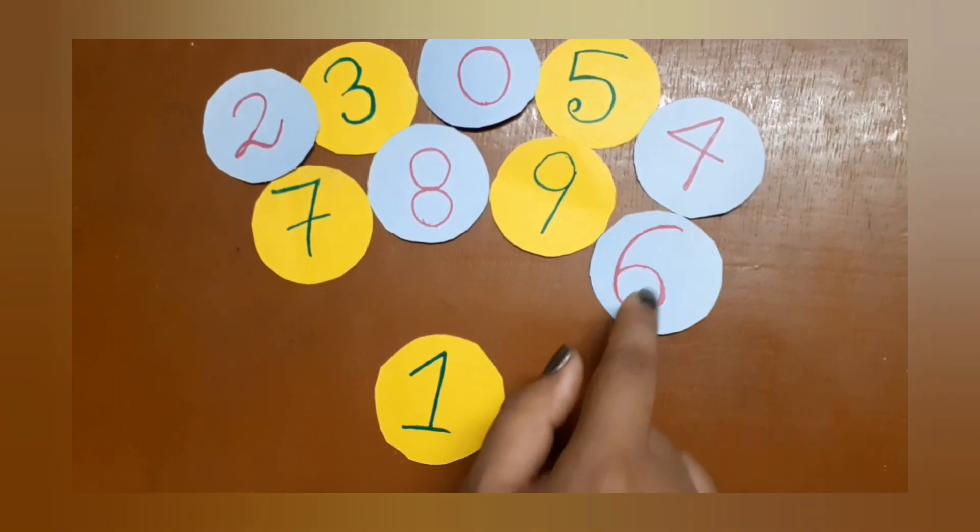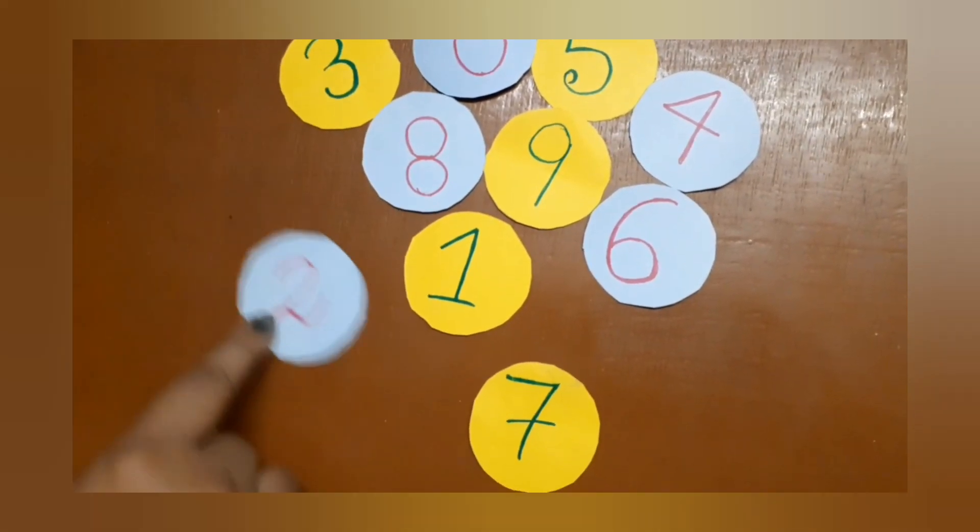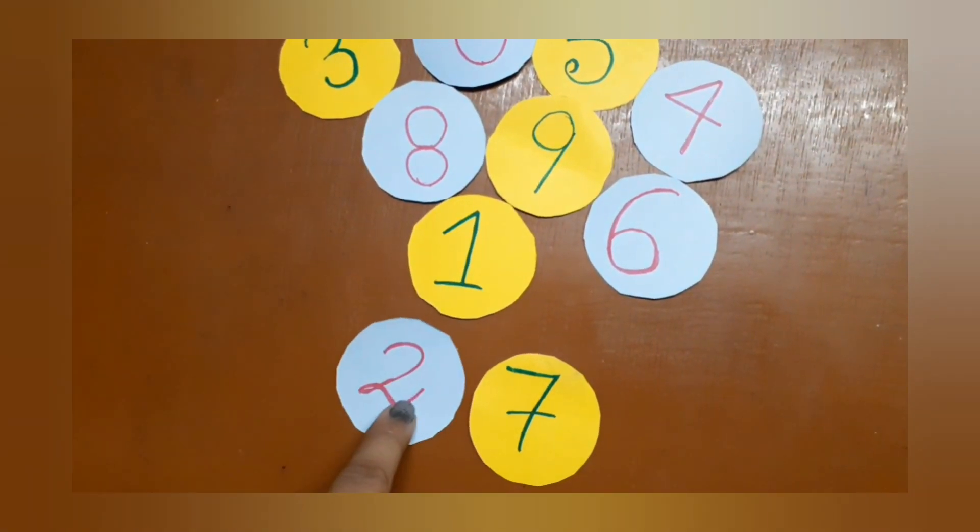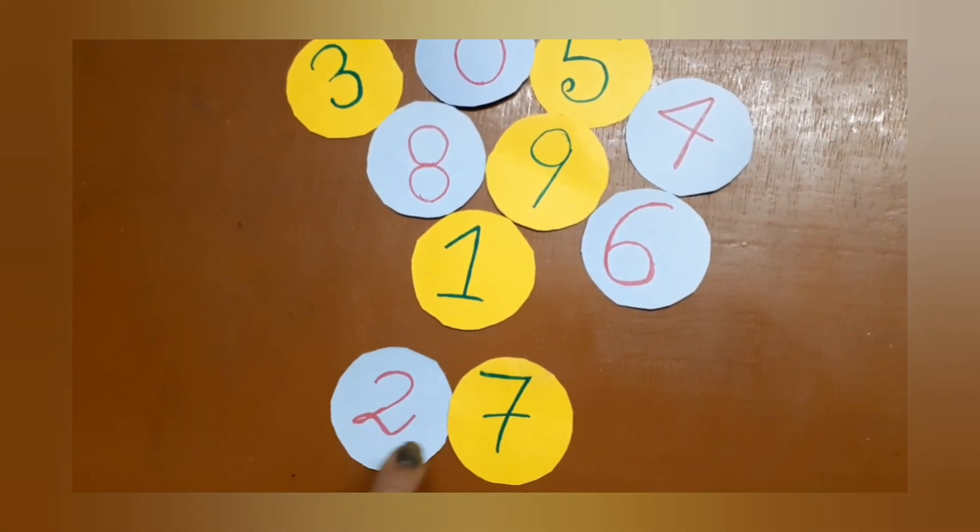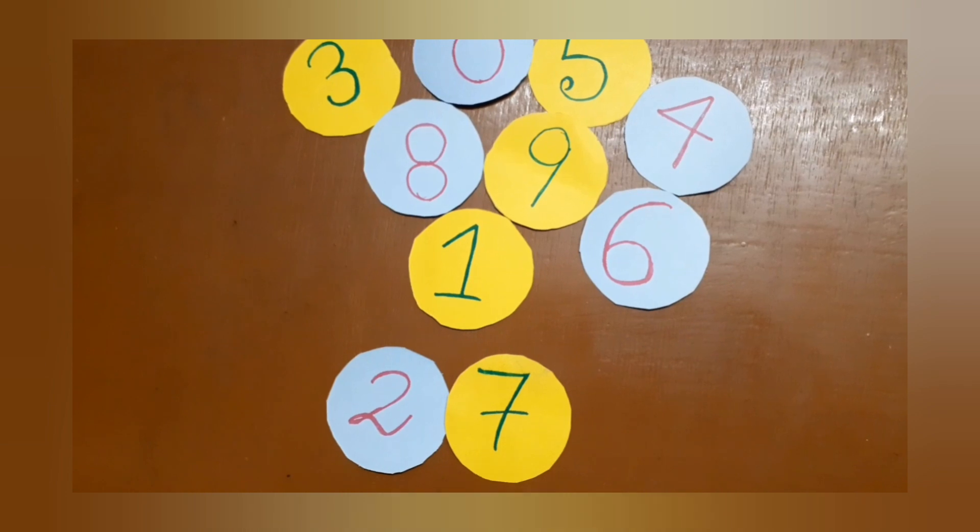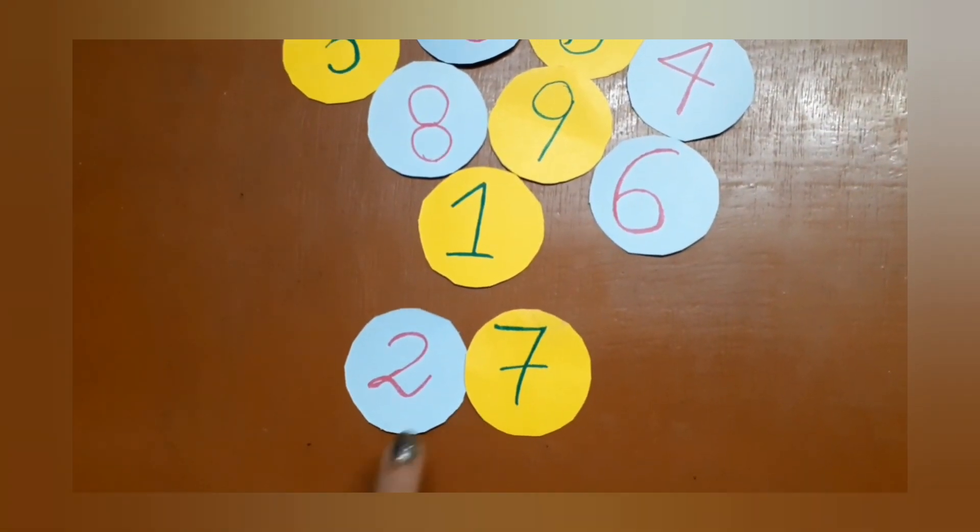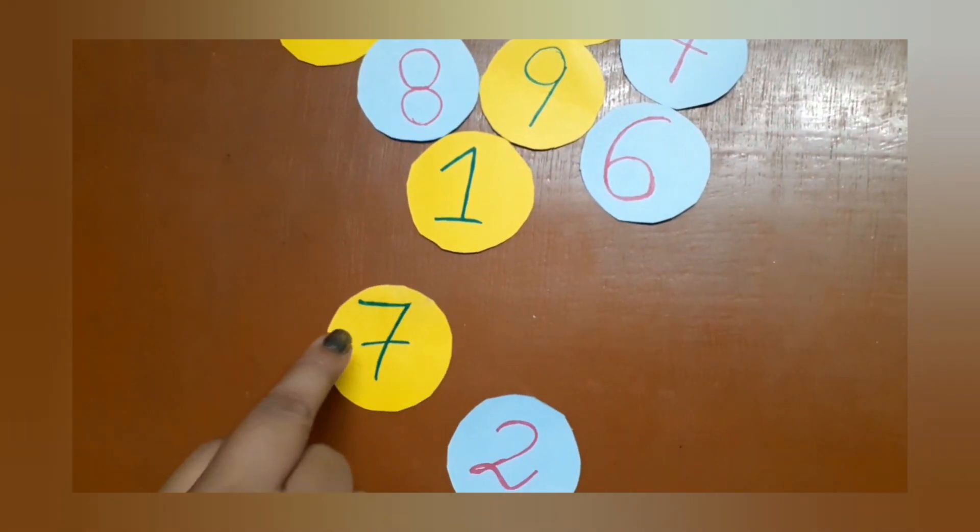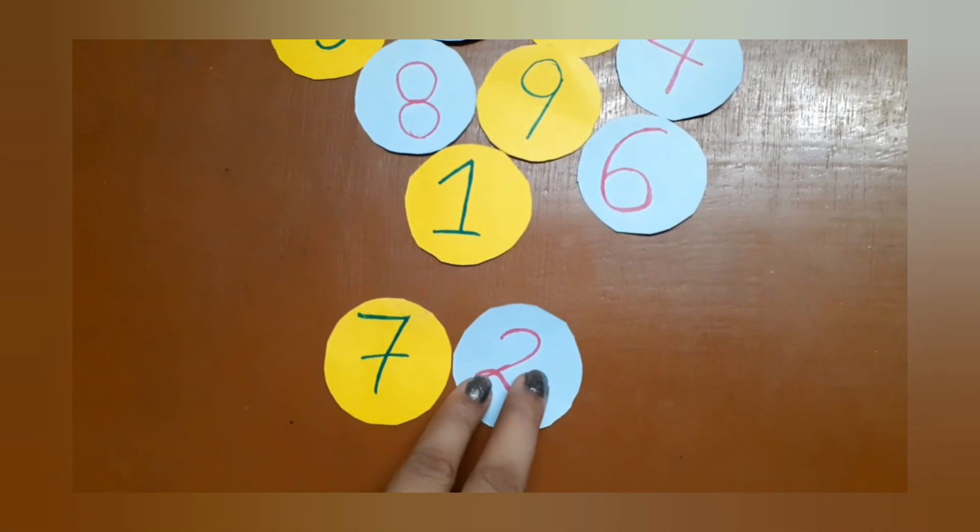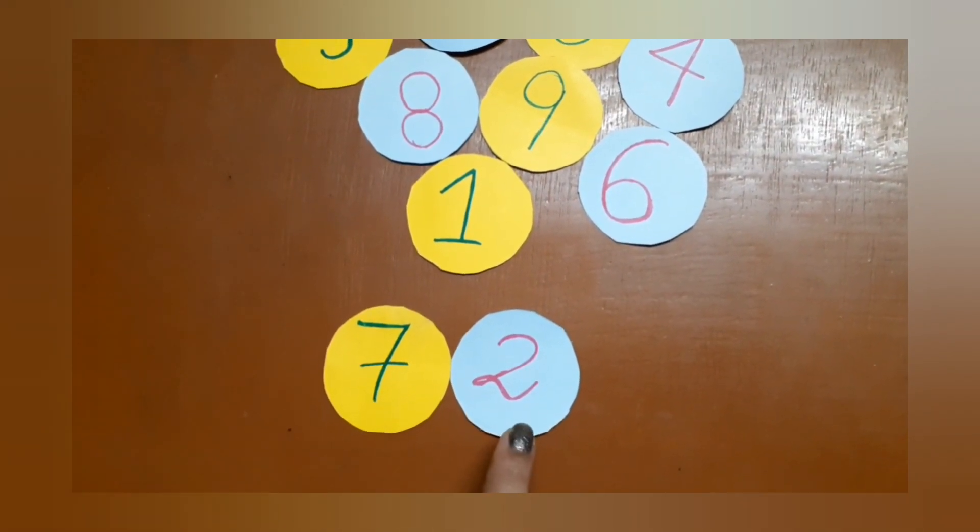Next let's take this seven and two. Two seven, what is the number? Two seven, twenty-seven, correct. Now let's change their position. If seven comes on this side and two comes here, which number do you get? Seven two, seventy-two.